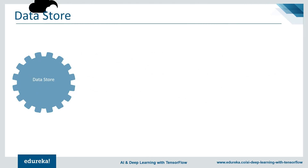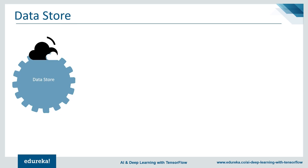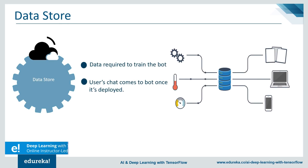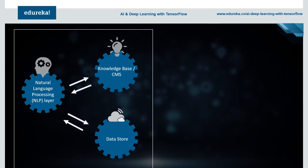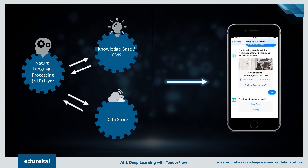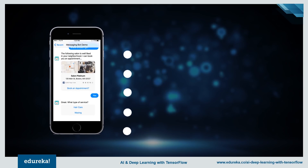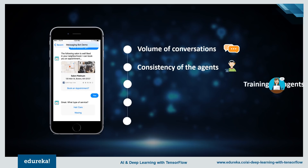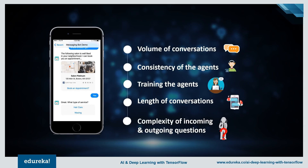It is believed that chatbots will take over almost 85% of all customer service interactions by 2020. Training a chatbot happens at a much faster and larger scale than teaching a human. Customer service representatives are given manuals, while the customer support chatbot is fed with thousands of conversation logs, and from those logs the chatbot understands what type of question requires what type of answer. Five key points to consider for a chatbot to work well include: volume of conversations, consistency of agents, training the agents, length of conversations, and complexity of incoming and outgoing questions.